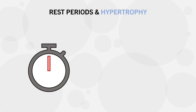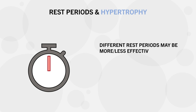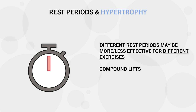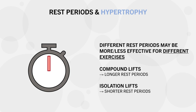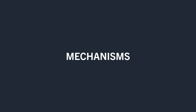So as we can see, we have somewhat of a divide in the research. There is likely no single best rest period to implement; rather, rest periods may need to be individualized based on the exercise we are performing. In general, we find superior muscle growth with longer rest periods for compound lifts, but superior muscle growth with shorter rest periods for isolation lifts. So why is this the case? Why are longer rest periods usually better for compound lifts, but shorter rest periods may be equally as effective or even superior for isolation lifts?